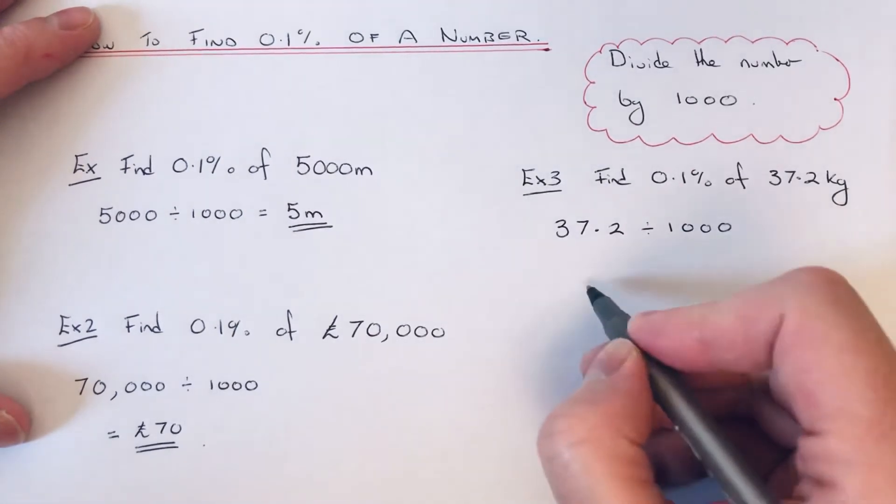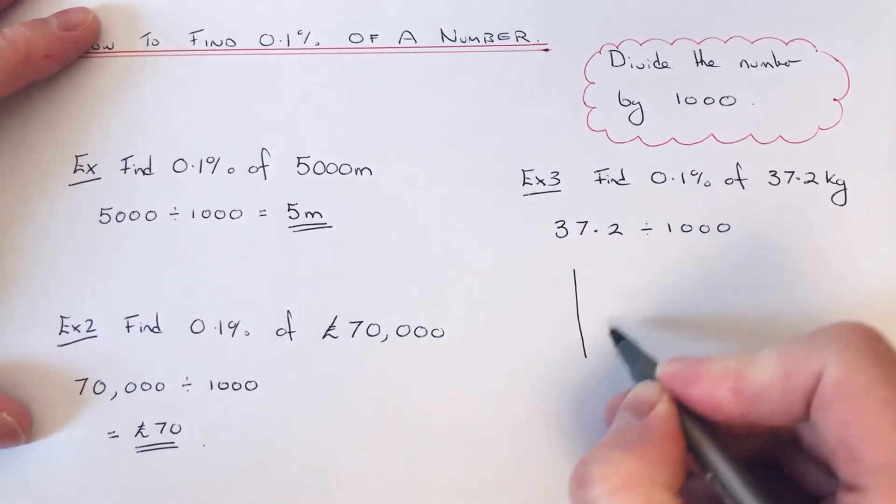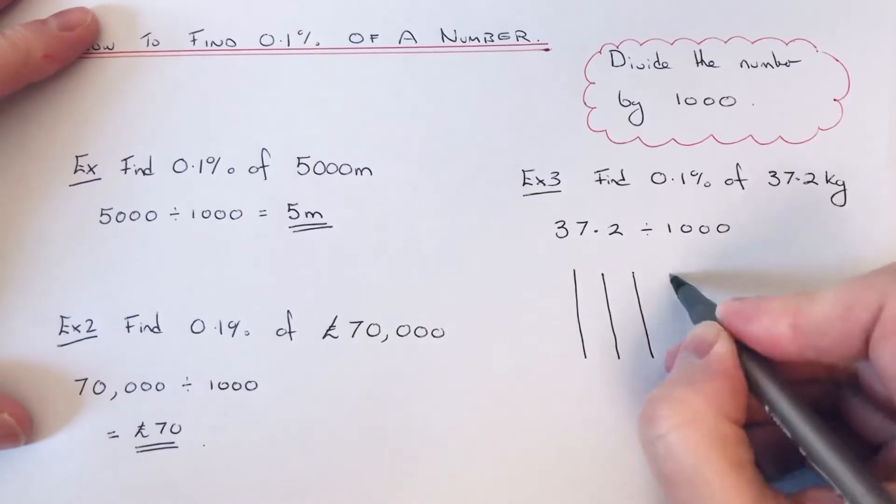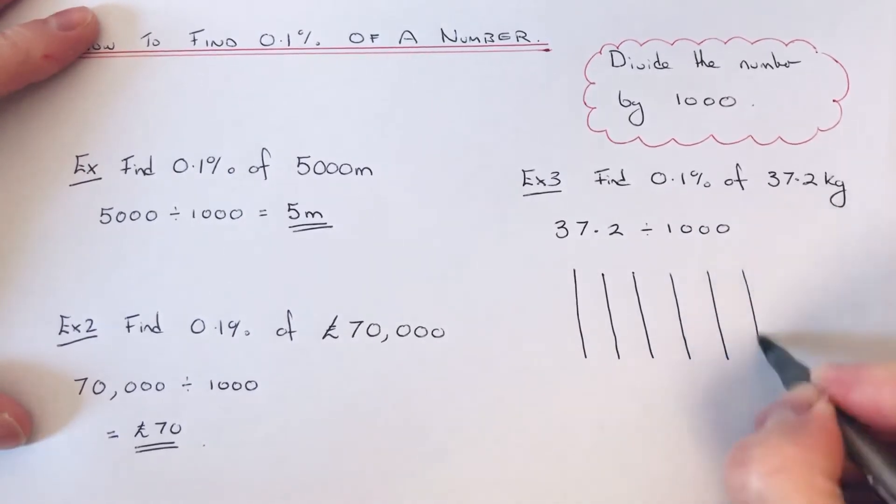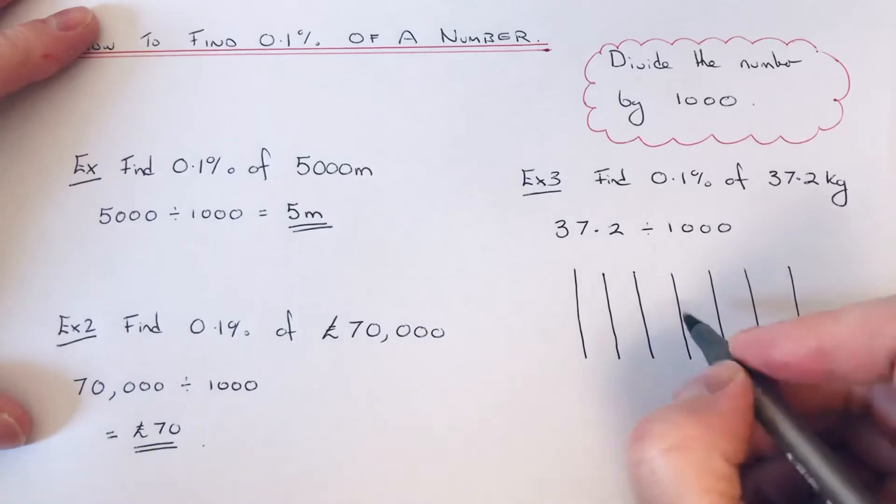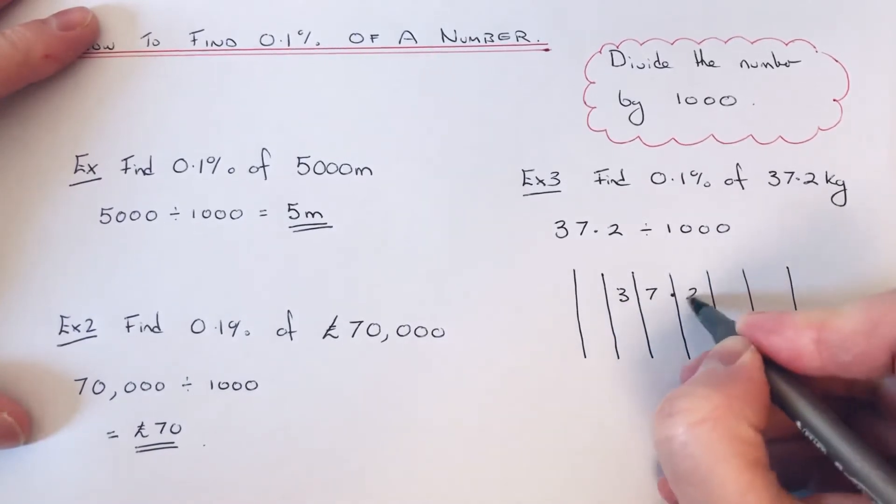If you can't do this one in your head, just do the column method. So if we just write 37.2.